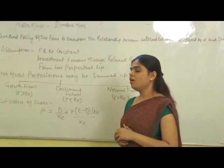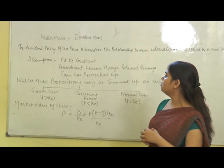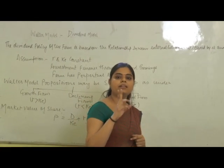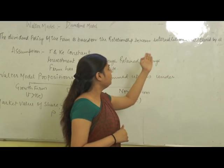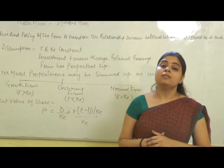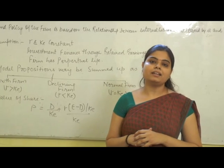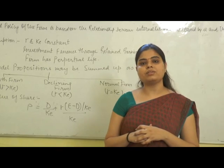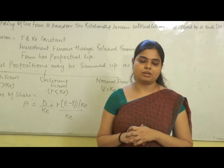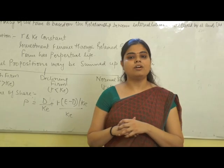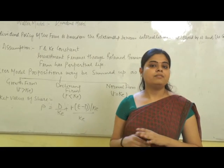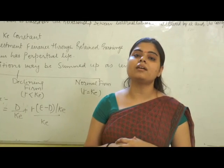Today we discuss only the Walter model. The Walter model shows the relationship between the internal rate of return and the cost of capital — two variables. First one is R, that is the internal rate of return, and second one is the cost of capital, that is K. The Walter model says that the firm distributes the dividend only when they don't have the investment opportunity. If they have the investment opportunity, they retain 100% profits in the organization, because the aim is wealth maximization of the investors. If they don't have the investment opportunity, they distribute the dividend to the investors so that they can invest in further areas for maximum returns.